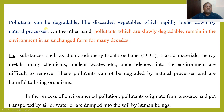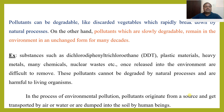Pollutants can be degradable — like discarded vegetables which rapidly break down by natural processes. On the other hand, slowly degradable pollutants remain in the environment in an unchanged form for many decades — for example, dichlorodiphenyltrichloroethane (DDT), plastic materials, heavy metals, many chemicals, and nuclear waste. Once released into the environment, these are difficult to remove and are harmful to living organisms.